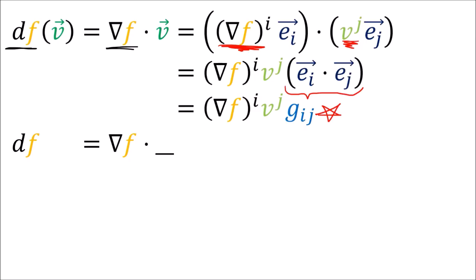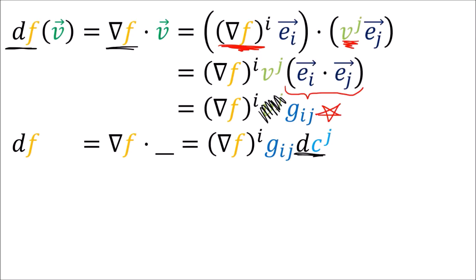Both df and del f dot something are covectors. To get this summation formula for the covector, we remove the v components and replace them with the covector basis dc_j. Since we're building a covector, we need to build these out of basis covectors, so we're adding the basis covectors dc_j. If you're confused by this step, that's because I'm waving my hand — a full explanation requires an understanding of the tensor product, which I'll include in my next video. For now, trust that since these are covectors we need to build them out of basis covectors, which are the dc_j's.